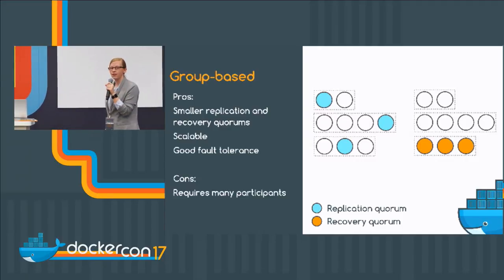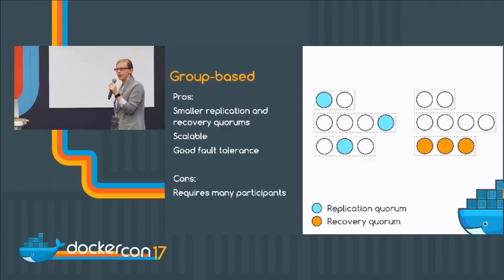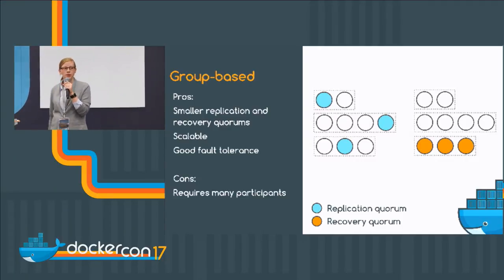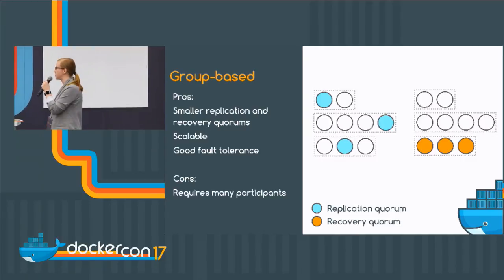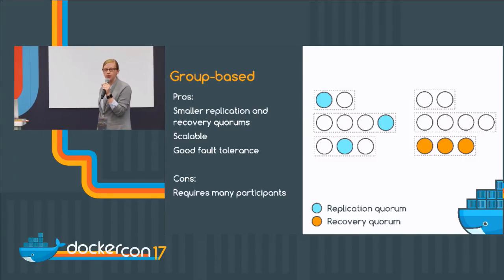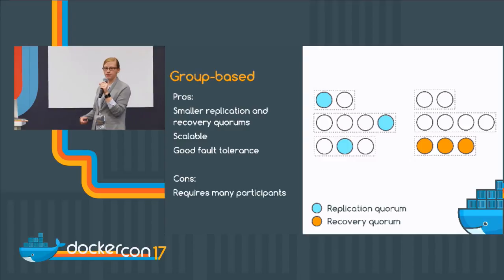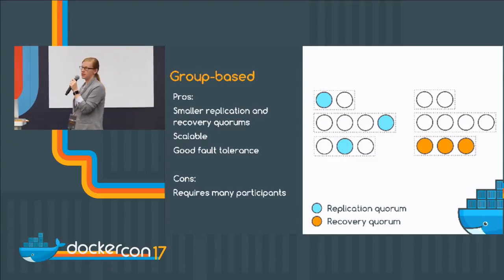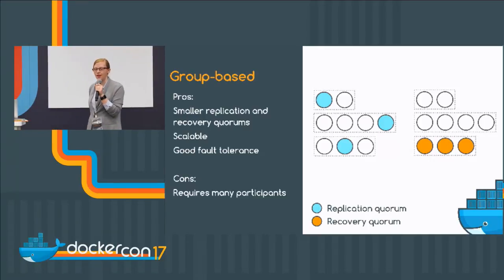And we can go even further. We can split nodes into groups, which you could then distribute across multiple data centers. When you're doing a replication, you want to get one node in each group to agree with you. And when you're doing a recovery, you get all of the participants of one group. And we know that this will always intersect.